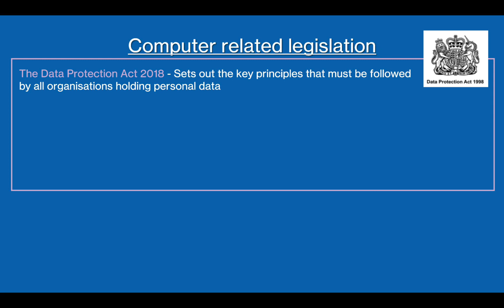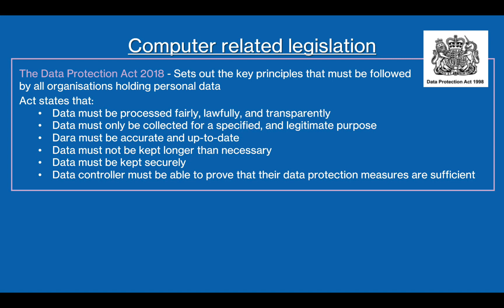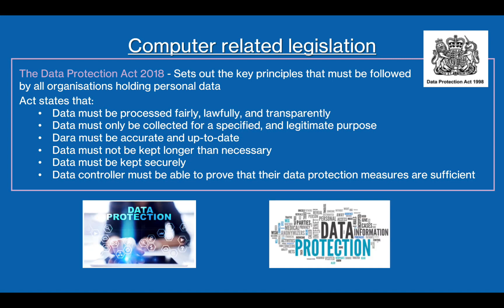The first law we will look at is the Data Protection Act of 2018. This law was passed by Parliament to govern the protection of personal data in the UK, ensuring that people's personal data remains private. There are many key principles within the law. These principles ensure that organisations keep and use people's personal data safely and fairly. Some of the principles include the fact that the data must be kept fairly and lawfully, it is only collected if it's needed, and that the data must be accurate and up to date. The data must also be kept securely and not kept longer than needed.